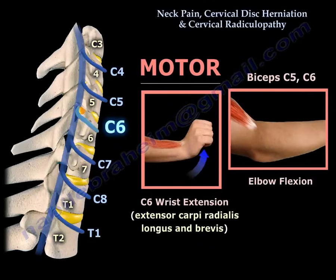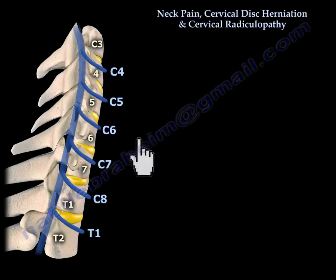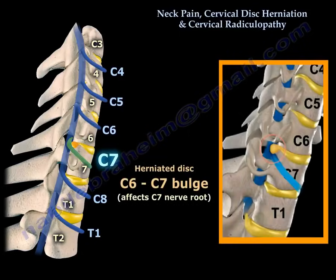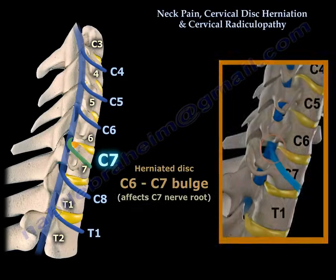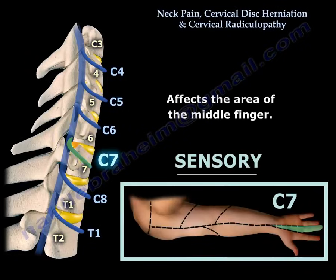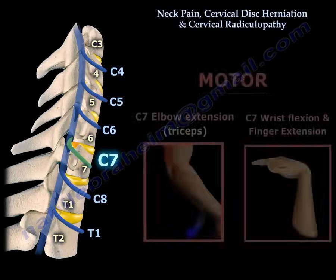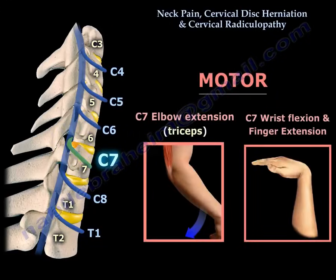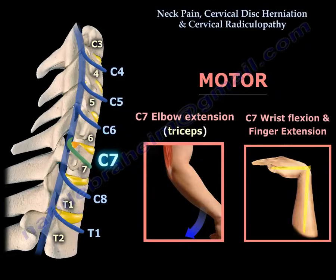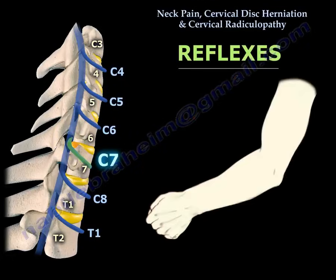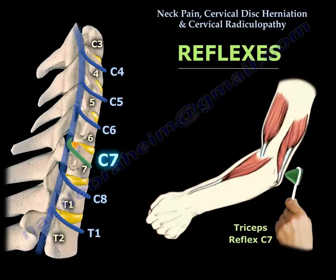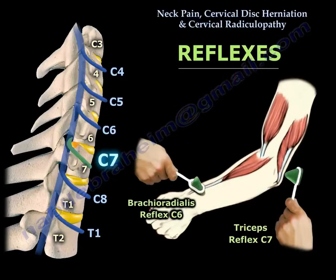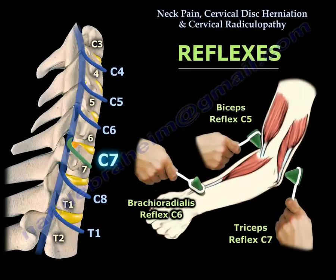A C6-C7 bulge or disc herniation will affect the C7 nerve root. The sensory area in C7 is the middle finger. The motor in C7 will be elbow extension via the triceps, as well as wrist flexion and finger extension, assuming the shape of number 7. The reflexes are: C7 is the triceps reflex, C6 is the brachioradialis reflex, and C5 is the biceps reflex.